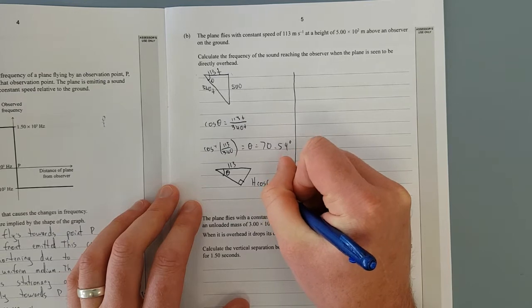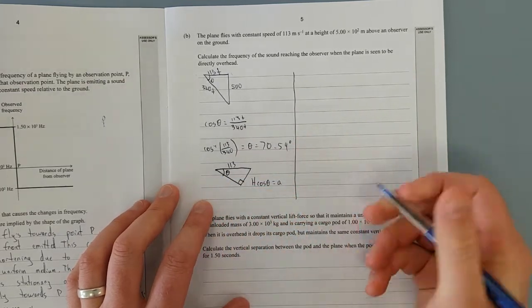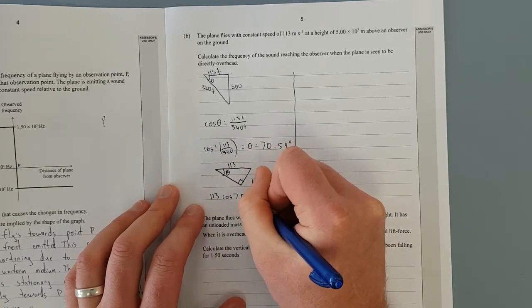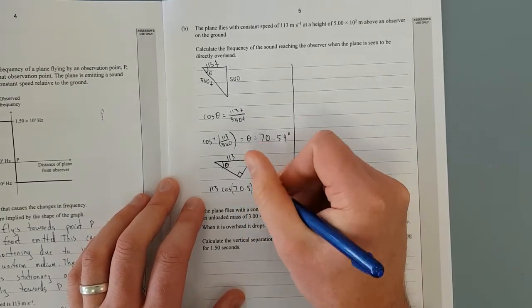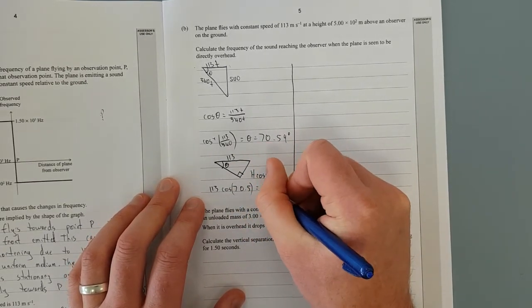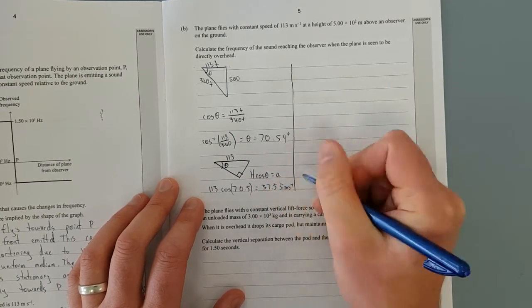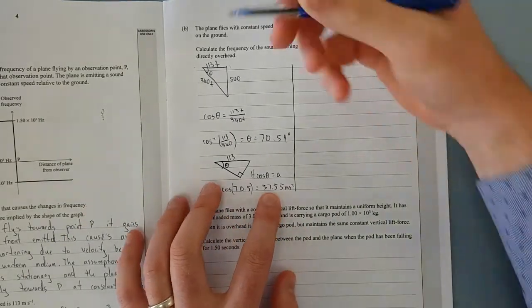Hypotenuse times cos theta is equal to the adjacent which is what we're trying to find, this component here. In other words 113 cos 70.5 is equal to 37.55 metres per second and this is relative to the observer.